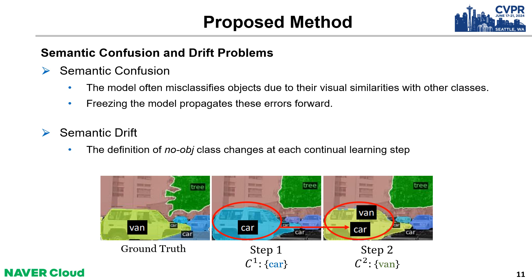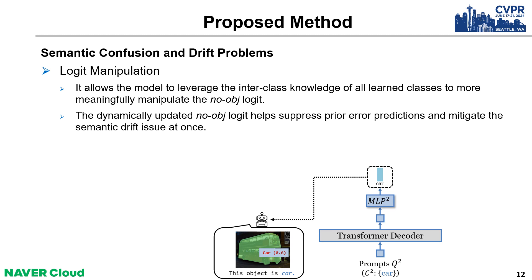We confront inherent challenges in continual panoptic segmentation: semantic confusion and drift. The model often misclassifies objects due to their visual similarities with other classes, and freezing the model propagates these errors forward, as shown in the figure. Also, the definition of the no-object class changes at each continual learning step, incurring the semantic drift issue. To handle these challenges, we propose a simple yet effective method called logit manipulation. It allows the model to leverage inter-class knowledge of all learned classes to more meaningfully manipulate the no-object logit. The dynamically updated no-object logit helps suppress prior error predictions and mitigate the semantic drift issue at once.